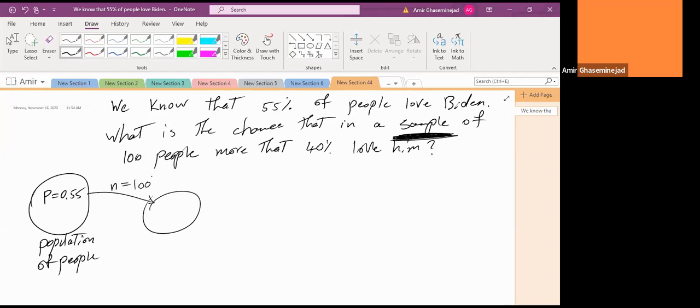We don't know anything about this sample. It asks that the proportion in the population, what is the chance that it would be more than 40%? Notice that we show the proportion of the population as p and proportion of the sample as p bar. So that is the population proportion is 0.55. The proportion in the sample is p bar. Now, I have to tell you that the proportion of the sample is not a constant. Every time that we take a sample, we will get a different proportion. What is the most expected proportion in the sample that love Biden?